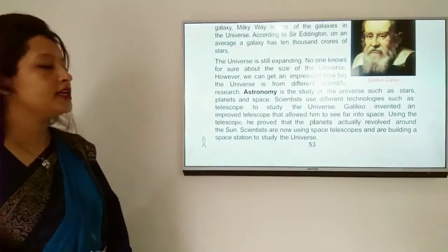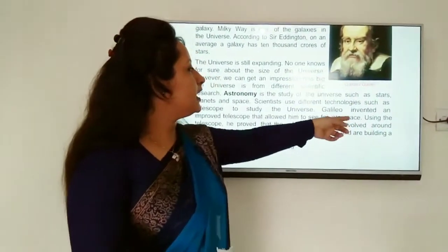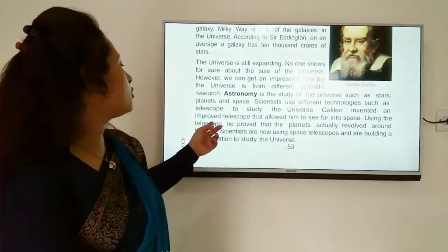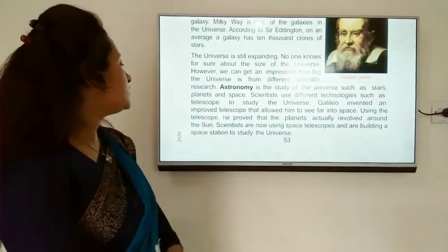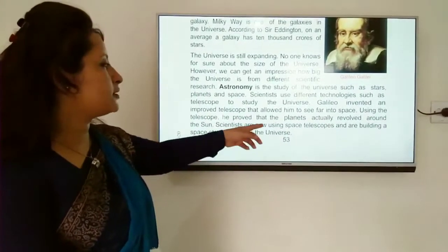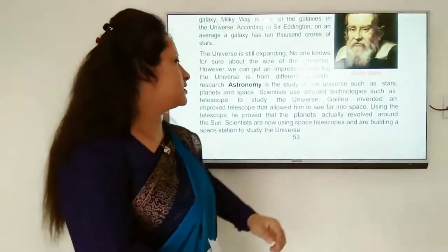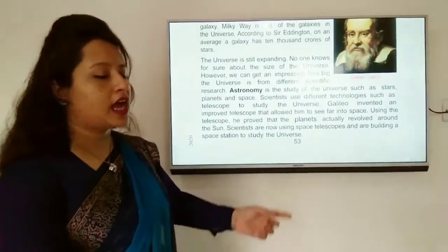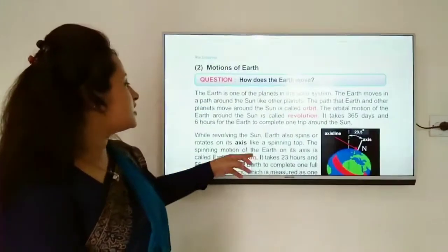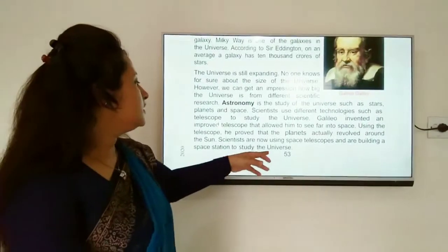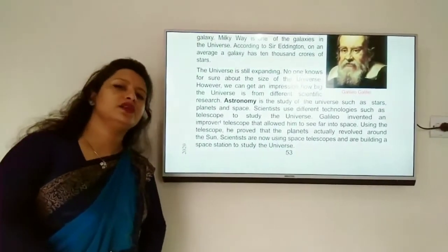Galileo invented an improved telescope that allowed him to see far into space. Using the telescope, he proved that the planets actually revolved around the sun. Scientists are now using space telescopes and building space stations to study the universe.